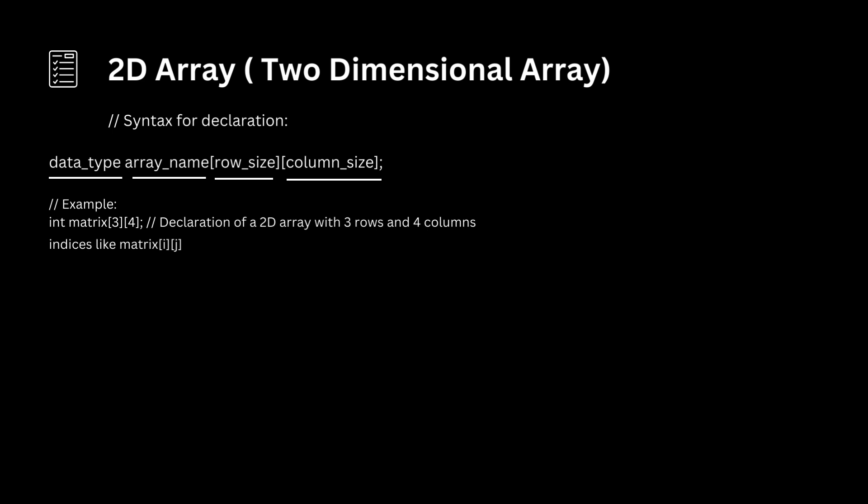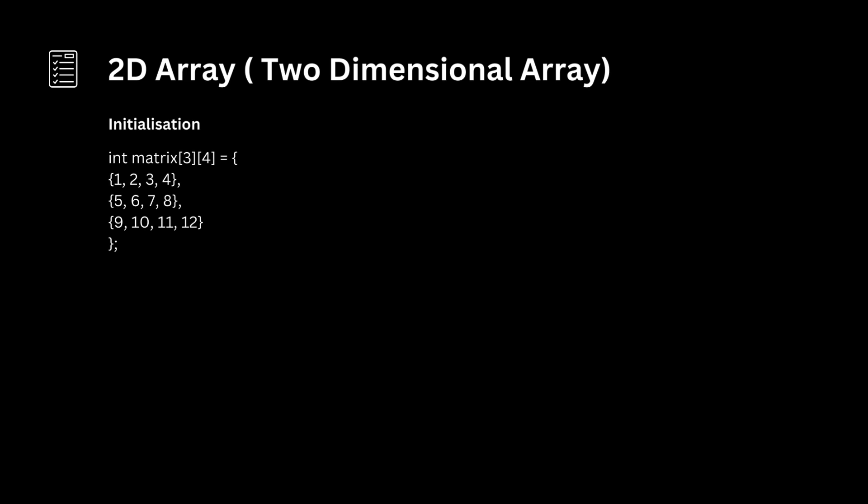Here are some key points and operations related to the 2D array in C. The first one is initialization: int matrix[3][4]. Int is the data type of the array — in this case, an array of integers. Matrix is the name of the array. 3 indicates the array has 3 rows, and 4 indicates that each row has 4 columns. The equal sign is used for initialization. The outermost curly braces indicate the initialization of the 2D array, and each inner set of curly braces represents a row of the array.